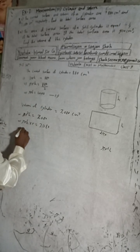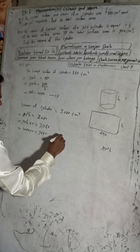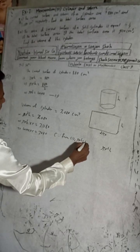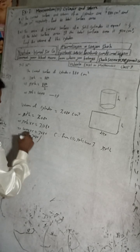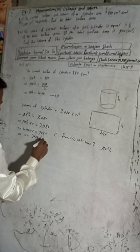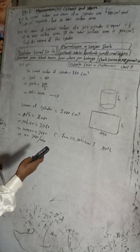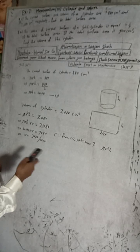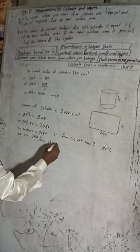Substituting πrh = 440 into the volume equation: 440 × r = 3080. Therefore r = 3080 ÷ 440 = 7. So r = 7 cm.